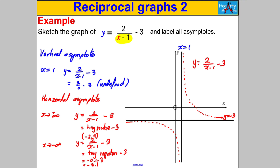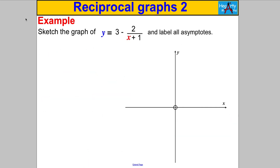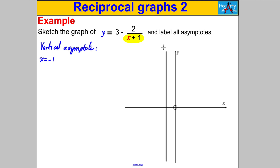One more to try — pause the video and have a go. For y = 3 − 2/(x + 1), we start with the vertical asymptote. Looking at the denominator, x + 1 = 0 when x = −1. So x = −1 is our vertical asymptote — let's draw that in and label it x = −1.